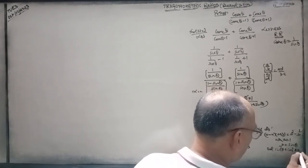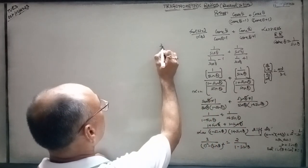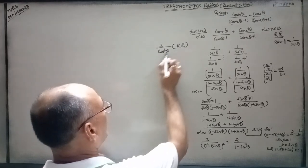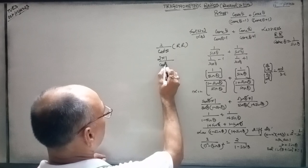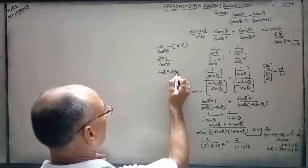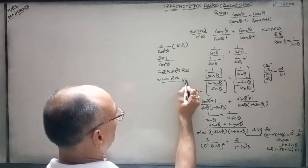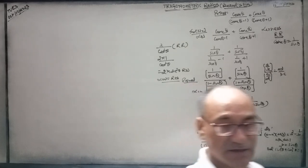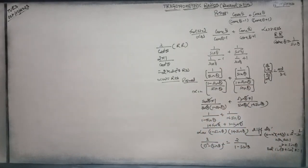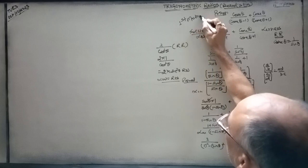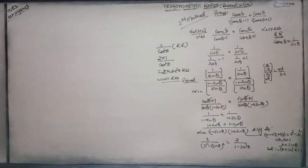So now you have to apply sine squared theta plus cos squared theta equals one. This is two upon one minus sine squared theta, and in place of one minus sine squared theta we can write cos squared theta. So this becomes two upon cos squared theta, which equals two sec squared theta. The left hand side is equal to right hand side. This is the first method. Now we are going for the second one.